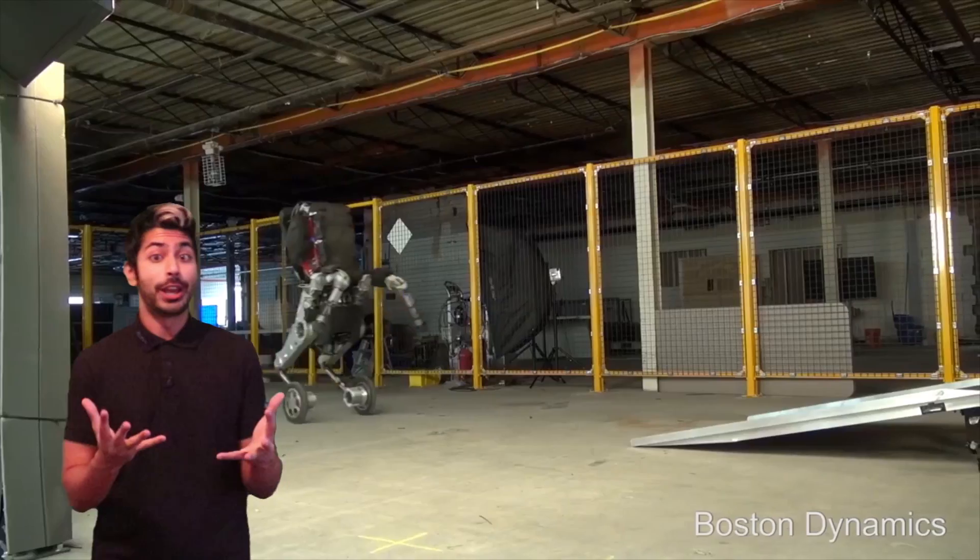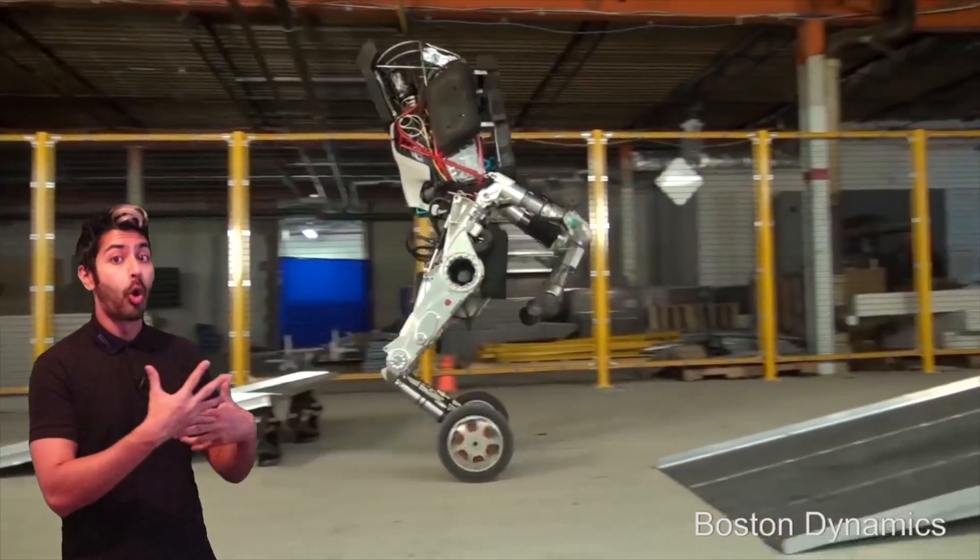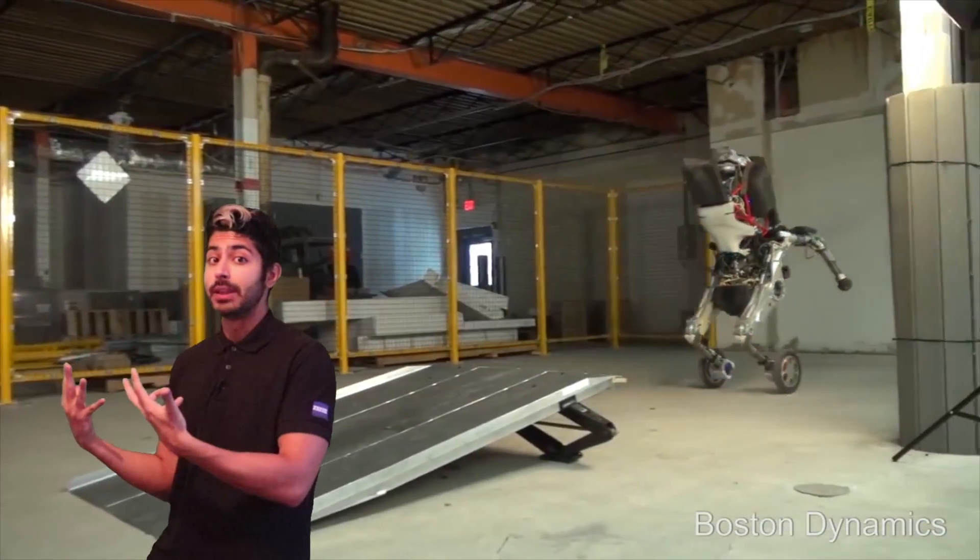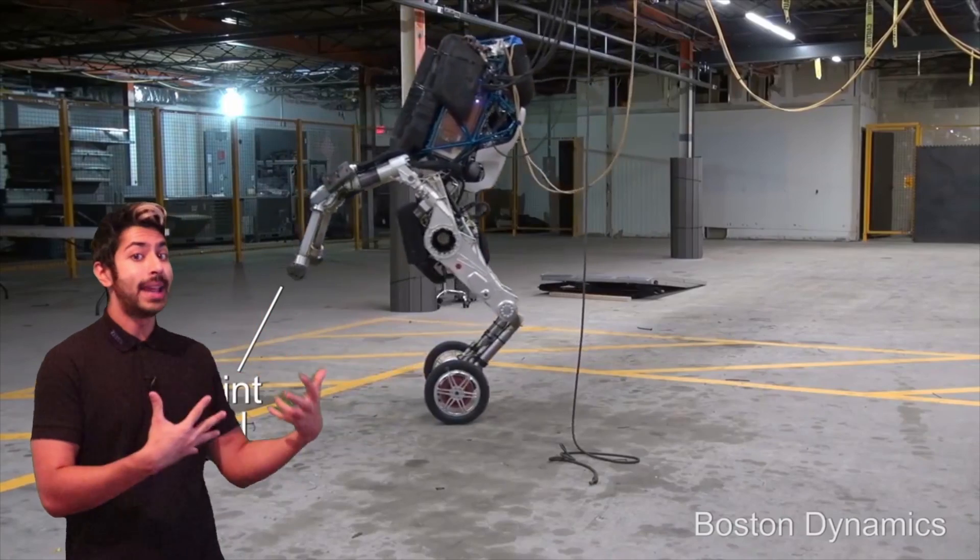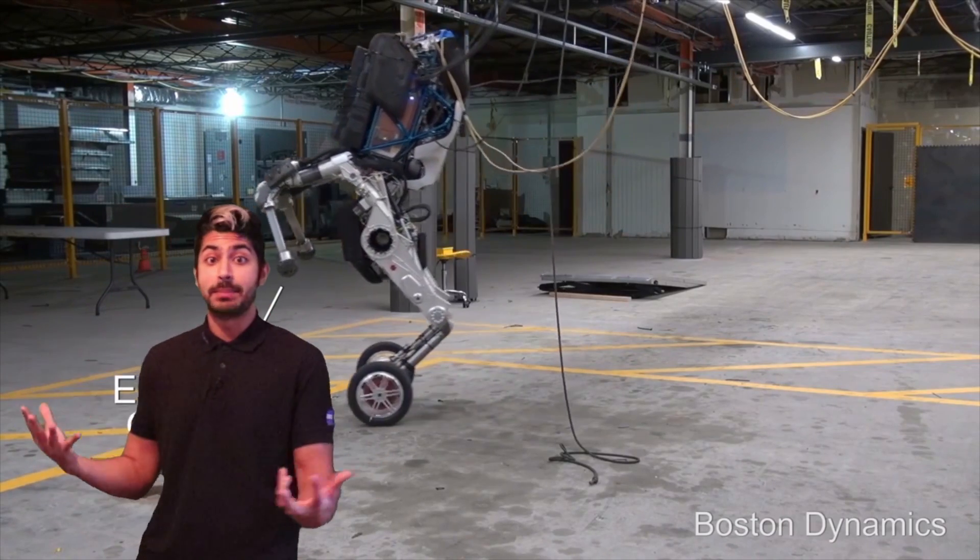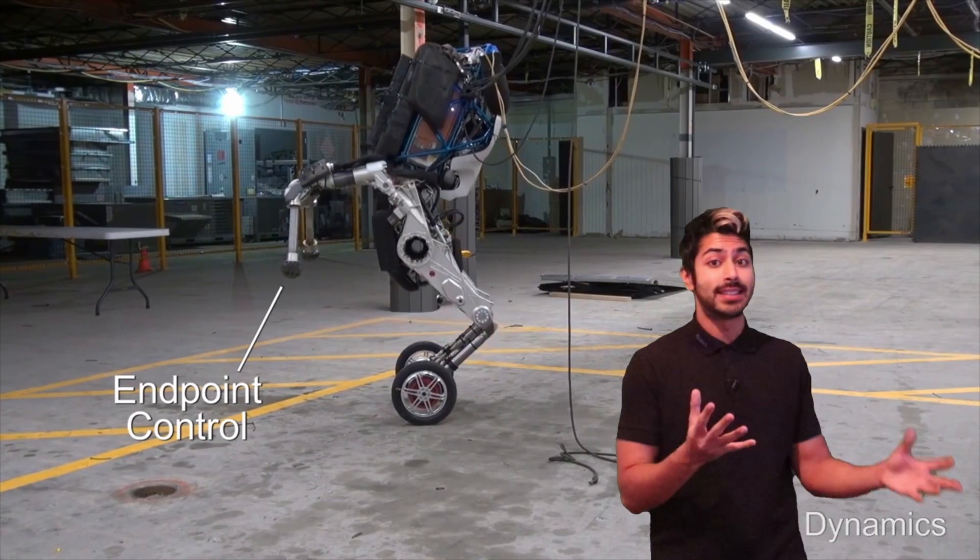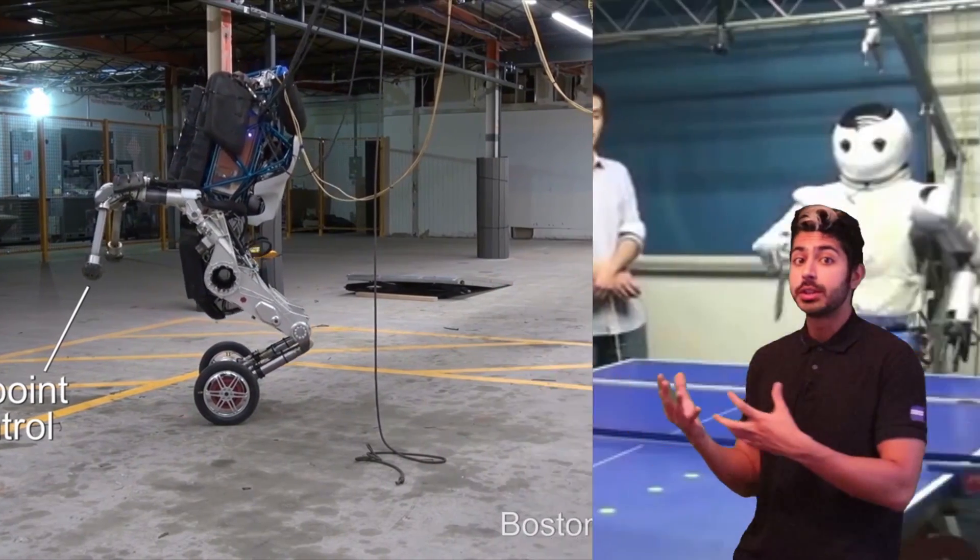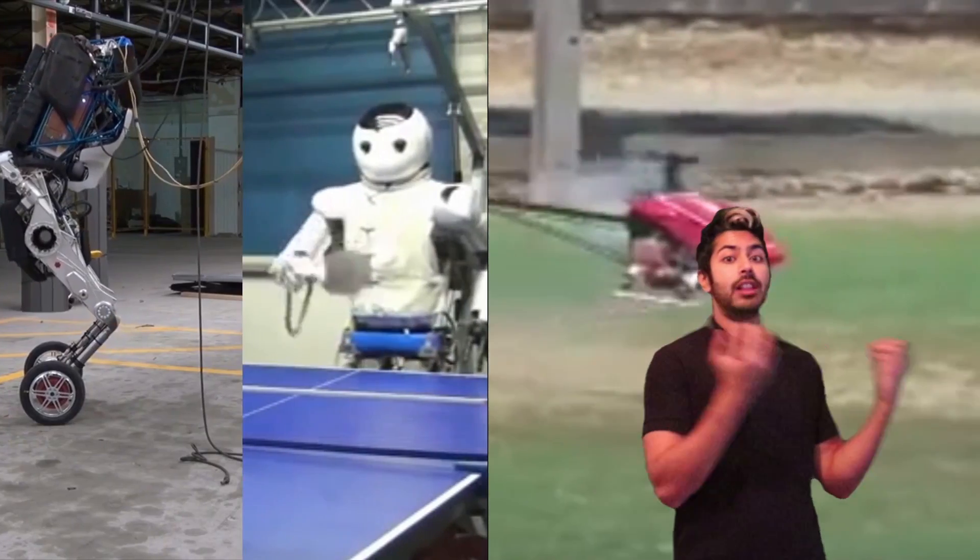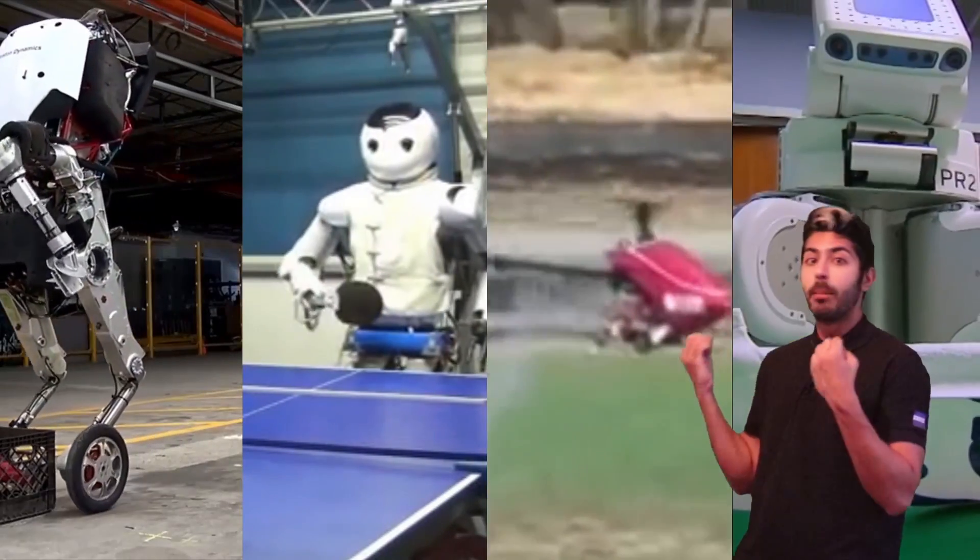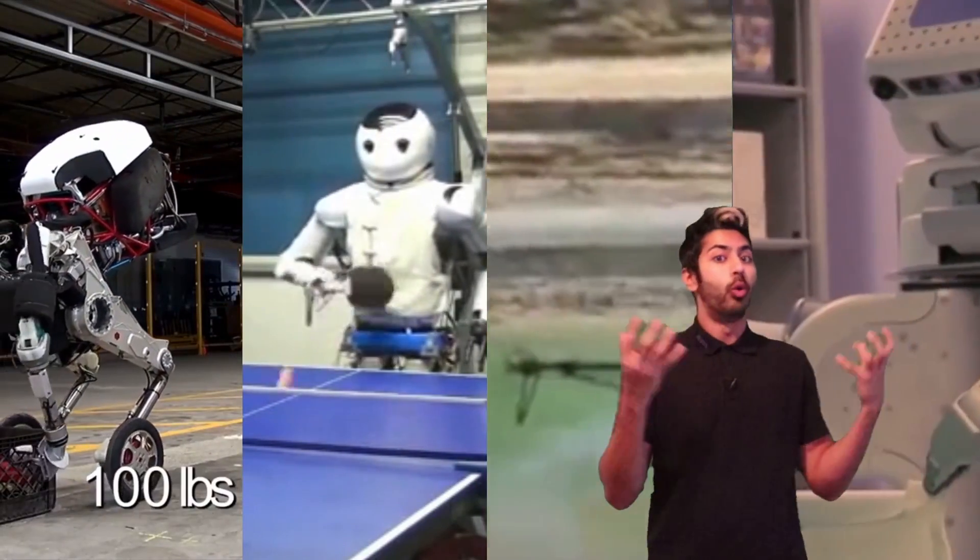Because reinforcement learning revolves around using rewards in some kind of environment, instead of using a pre-made data set, robotics has been a testbed for RL research for decades. There have been several successes in getting RL agents to learn to play sports, navigate a helicopter autonomously, getting robots to walk, and getting them to fold laundry.